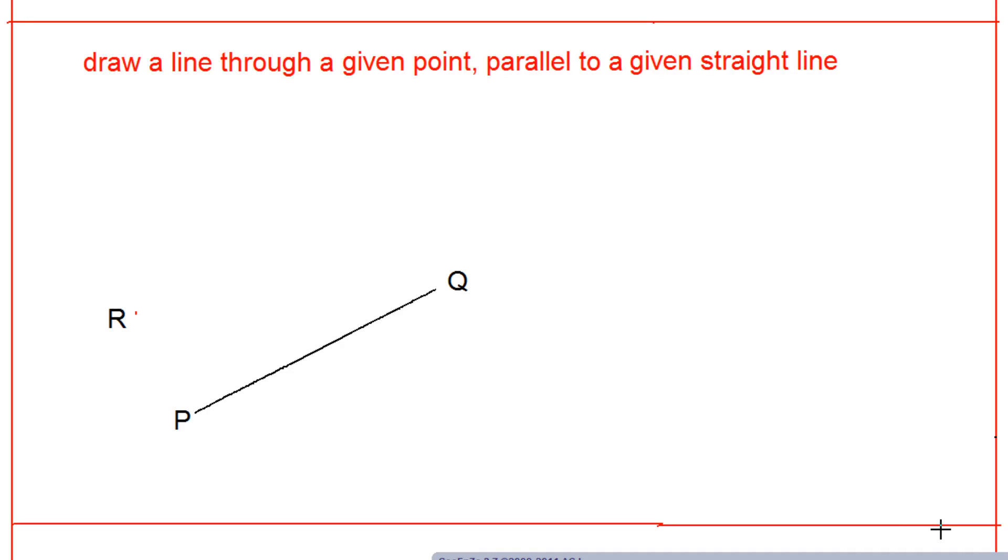In this problem we are interested to draw a line through a given point parallel to a given straight line. So let us assume that a given straight line is PQ and one point R is given. We have to draw a line which is parallel to the line PQ and also passing through the point R.